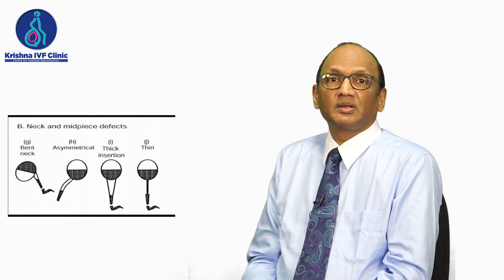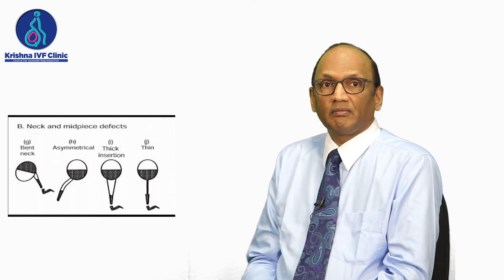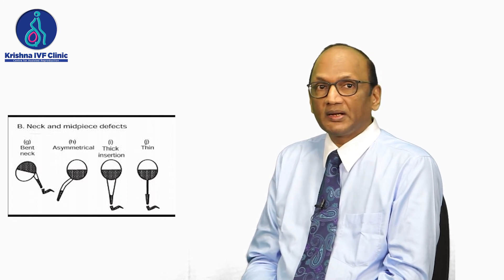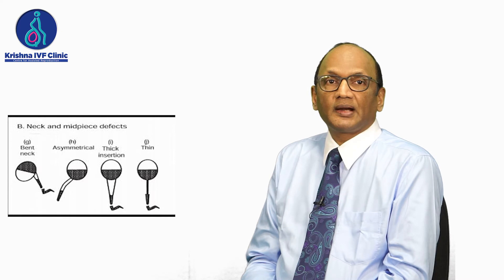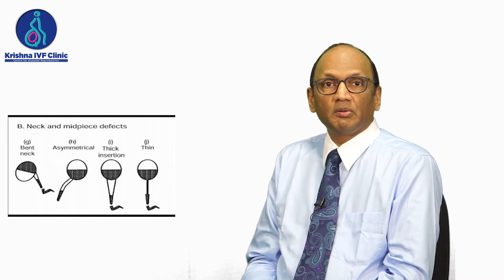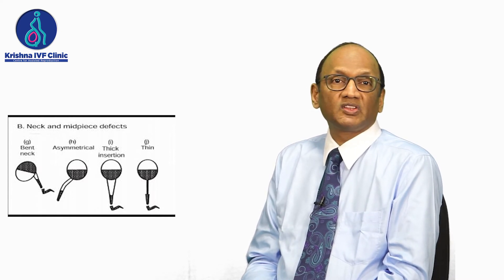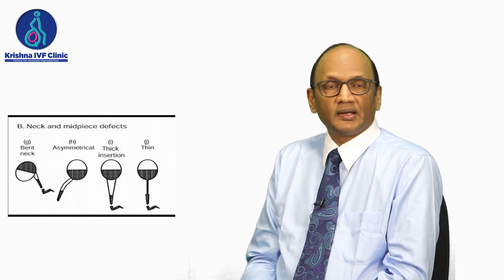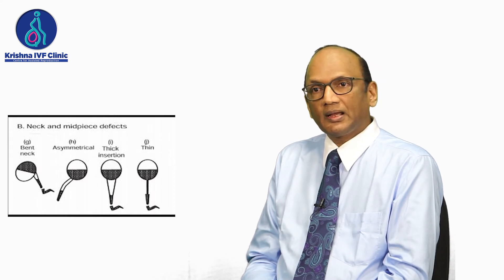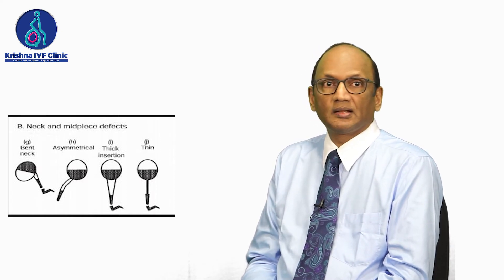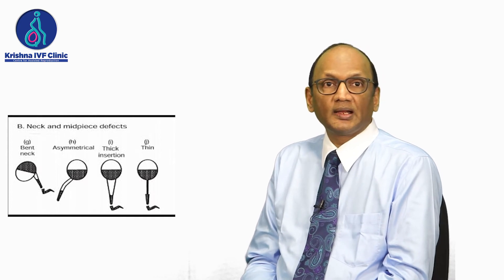We can also have whole sperm head abnormalities, described as macrospermia, piriform, or amorphous forms. The second part of the sperm is the neck, which contains the energy pack — the mitochondria — that drives sperm movement. Neck abnormalities can include a short neck, a bent neck, or an irregular neck.